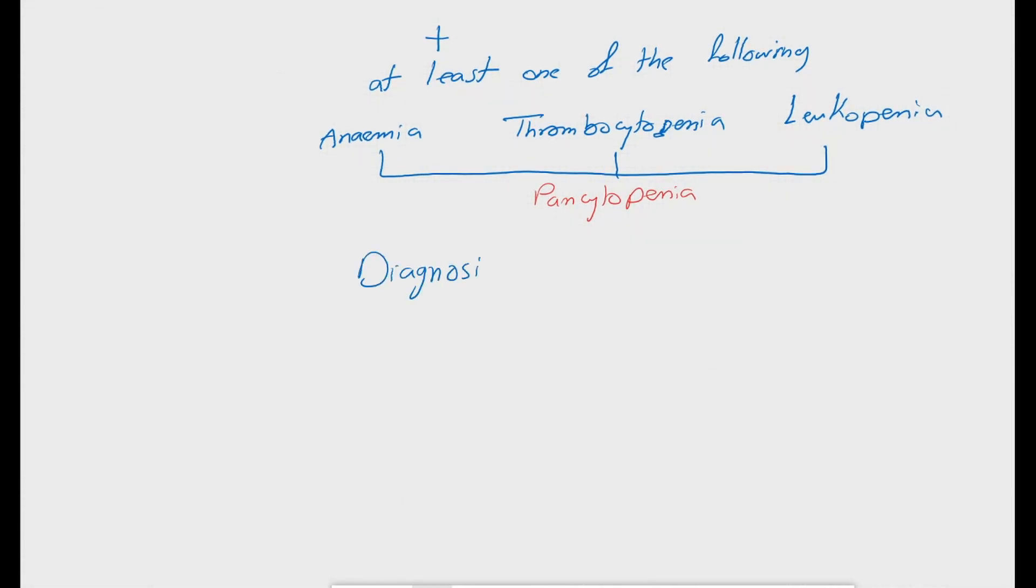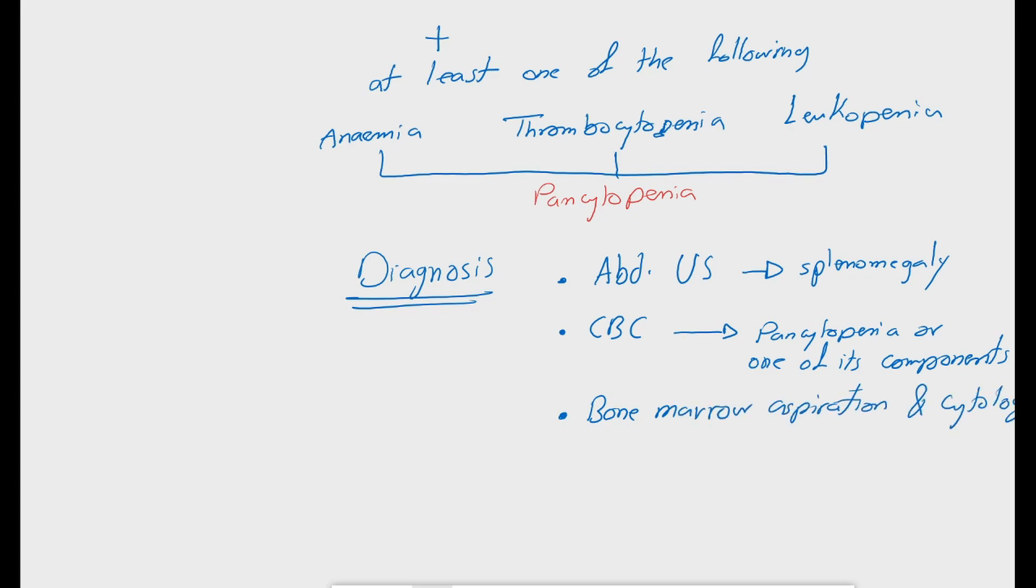The diagnosis depends on the abdominal ultrasonography to confirm splenomegaly, complete blood count, especially RBCs, platelets and white blood cell count and in cases of pancytopenia, a bone marrow aspiration and cytology is indicated to exclude bone marrow depression as a cause of pancytopenia. As in case of hypersplenism or peripheral destruction of blood components, we can expect a hyperproliferative bone marrow as a compensatory mechanism.